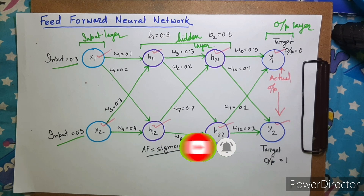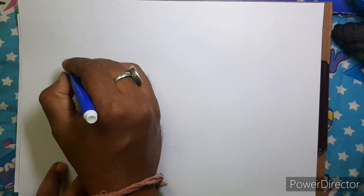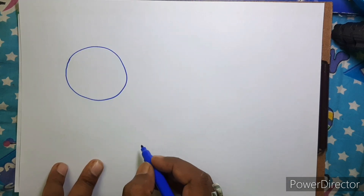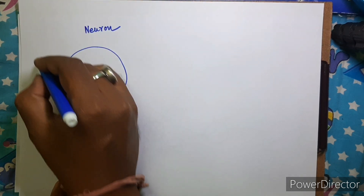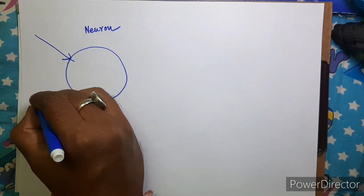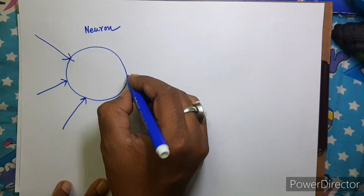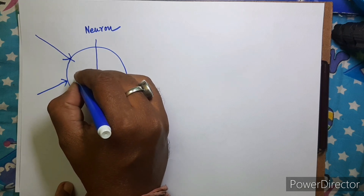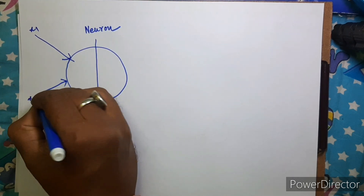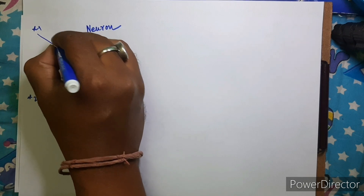Let's discuss how you can calculate this for a single neuron. So for any neuron, let's draw a neuron — we can have multiple inputs, and the overall input is calculated by the dot product of those inputs and the weights.